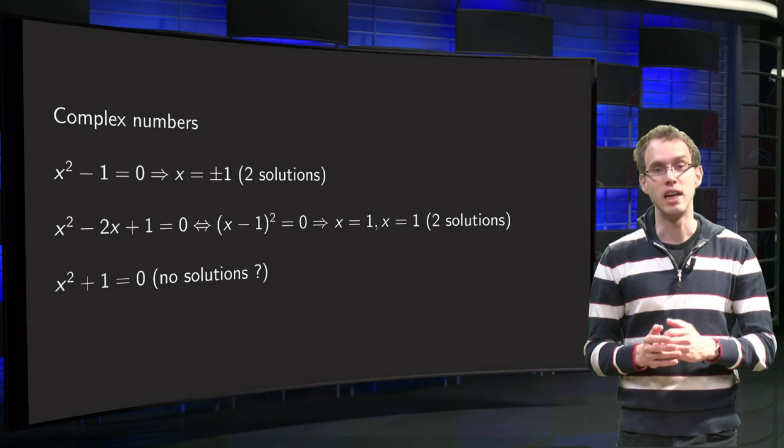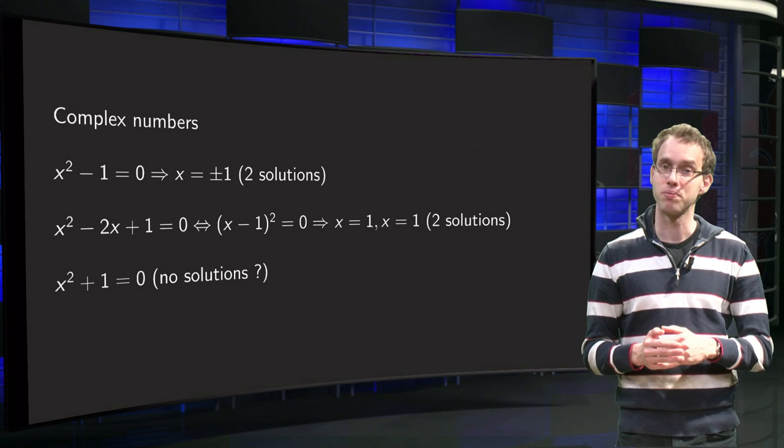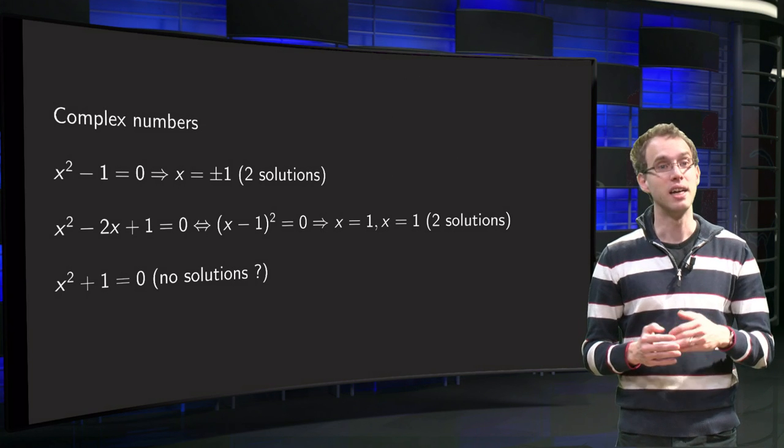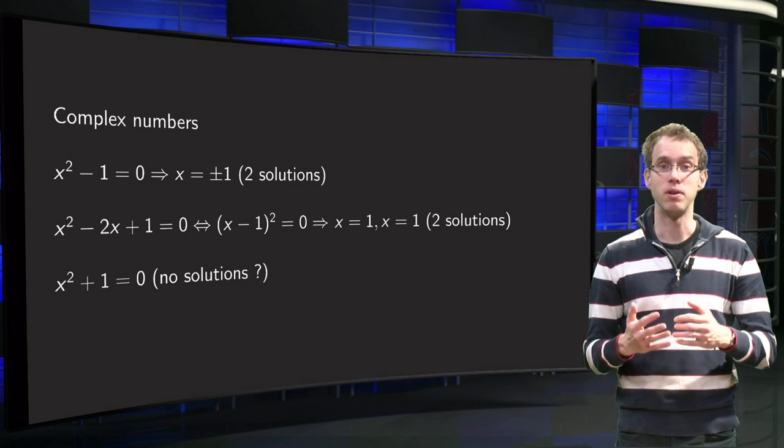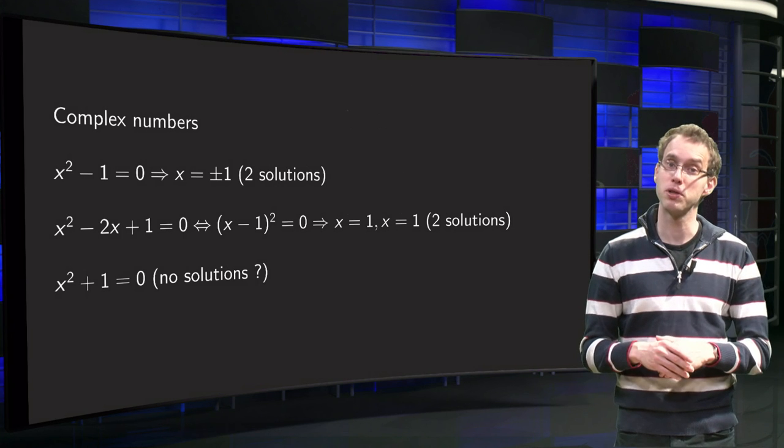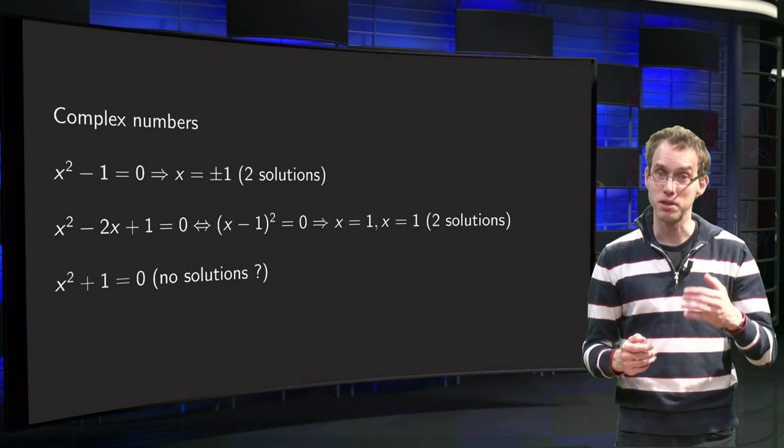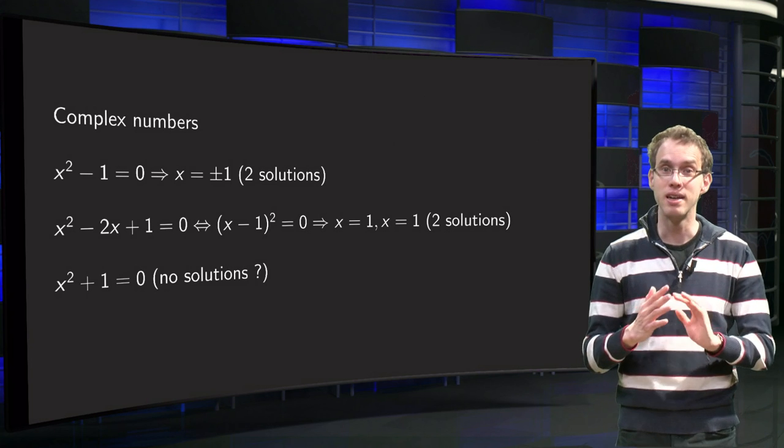And then we look at the third, x squared plus 1 equals 0, and then we see, hey, x squared is always positive, because any square of a real number is positive, we add 1, so we get something strictly positive, so it will be never 0.